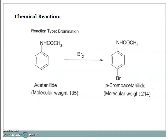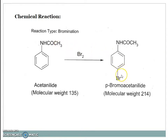The chemical reaction involved is bromination. This is acetanilide with molecular weight 135. When it is treated with bromine, the reactive hydrogen is replaced by bromine. It gives para-bromoacetanilide with molecular weight 214.